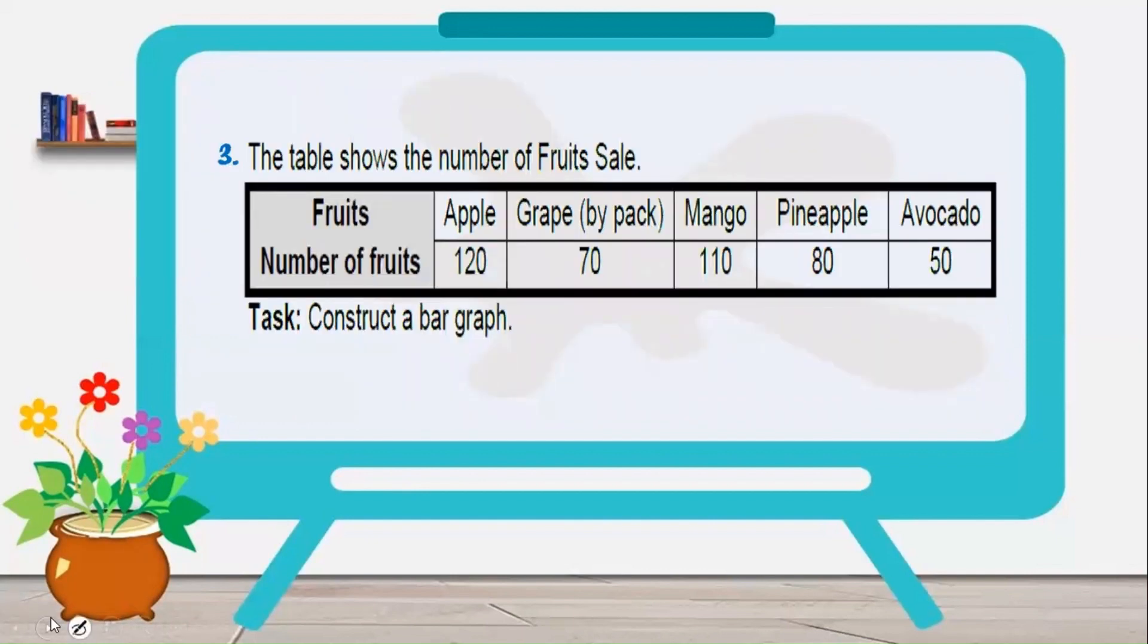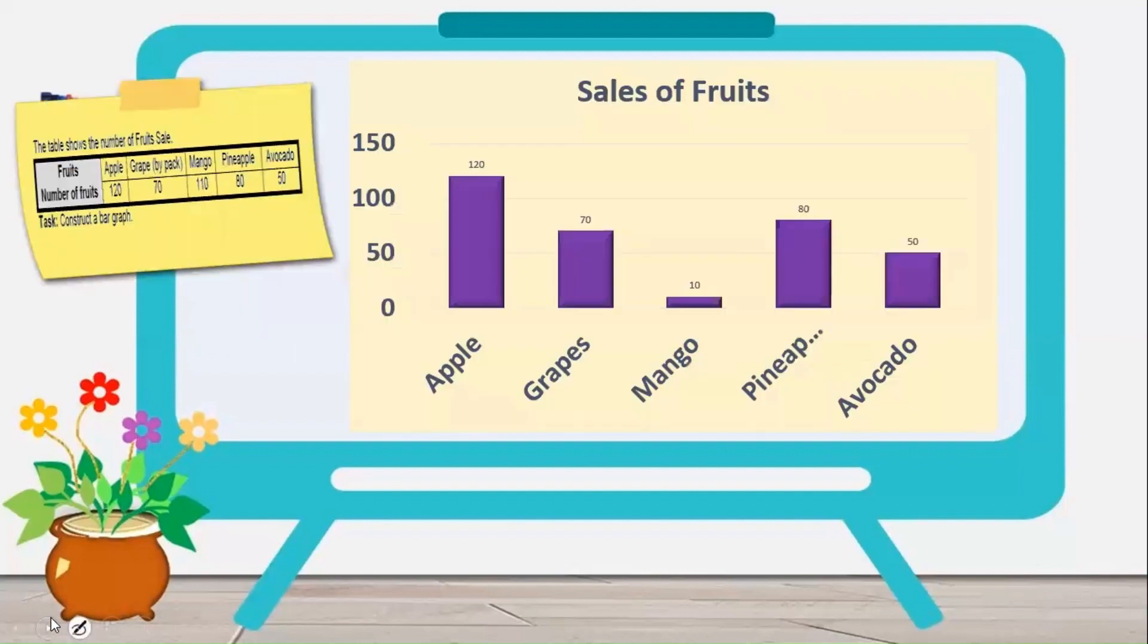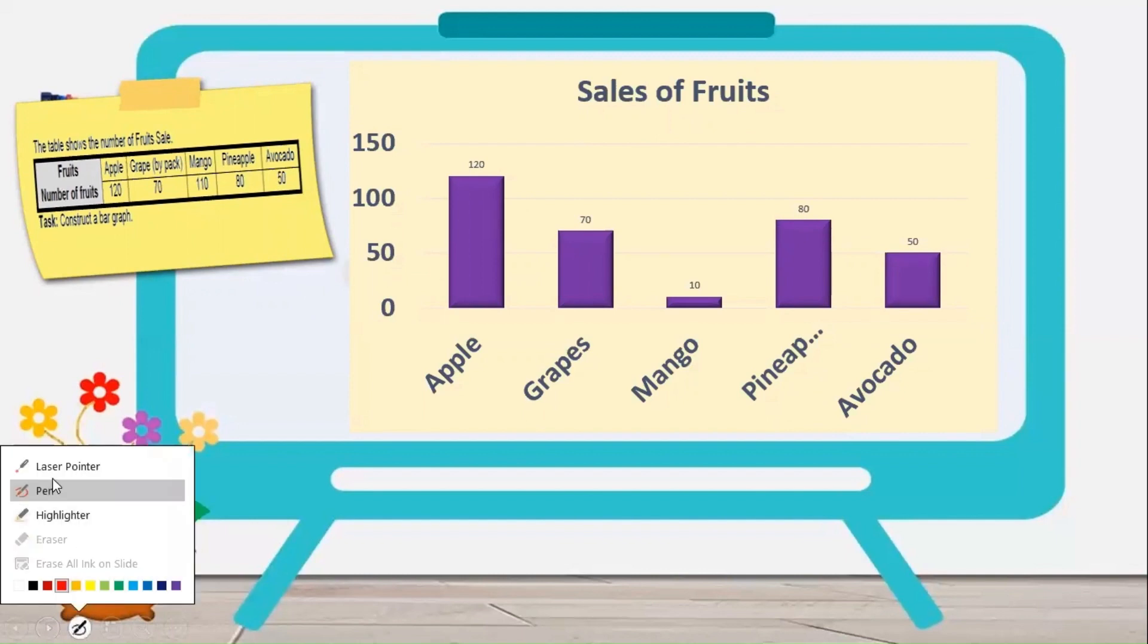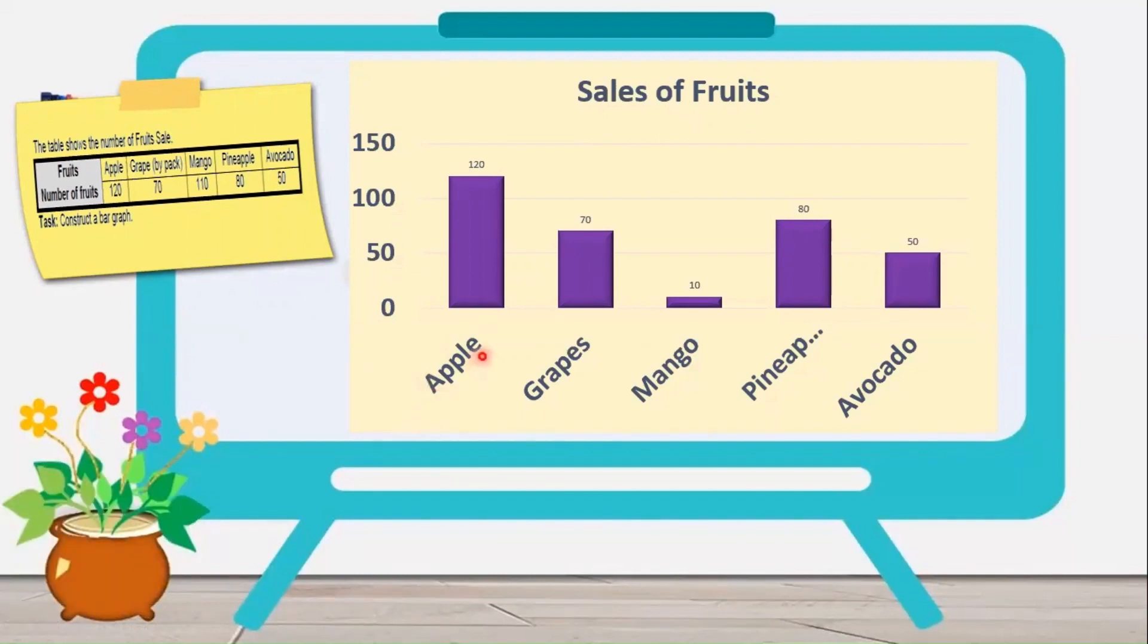Number 3. The table shows the number of fruits sale, so we need to construct a bar graph out of this. This is now the bar graph showing the sales of fruits. As we can see here, the fruit that sells the most is apple. Mango sells the least.